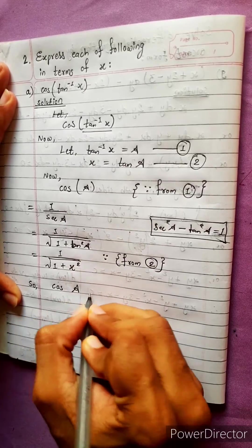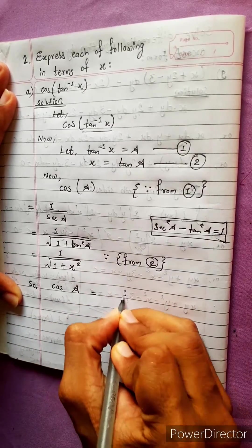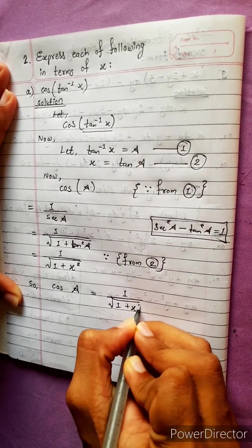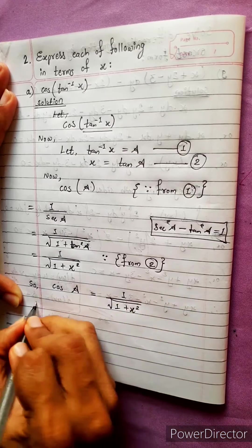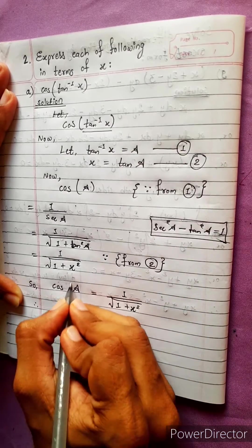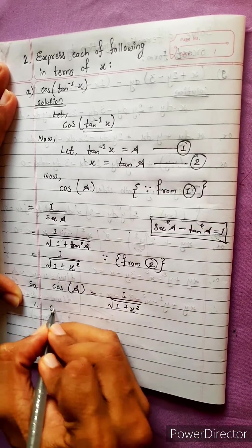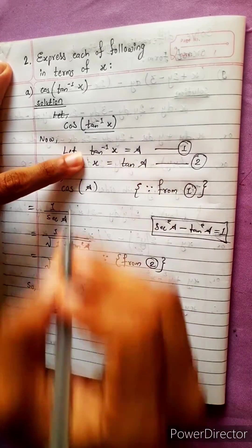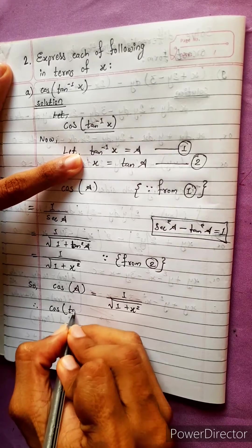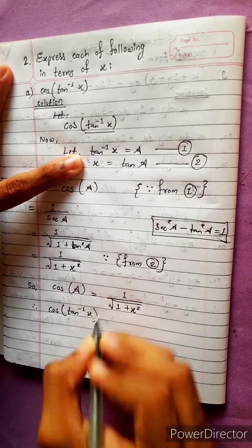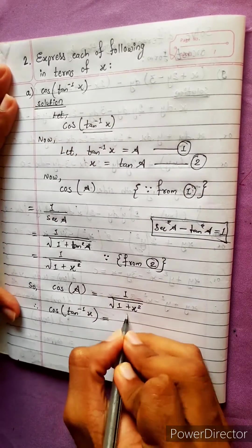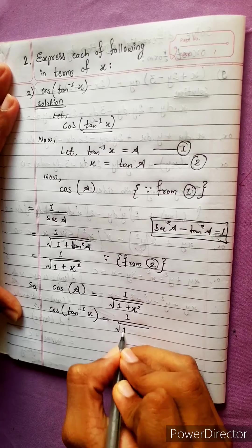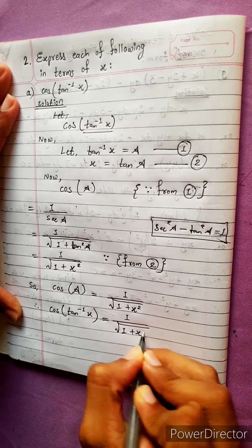So cos a equals 1 by under root 1 plus x square. Therefore cos(tan inverse x) equals 1 by under root 1 plus x square.